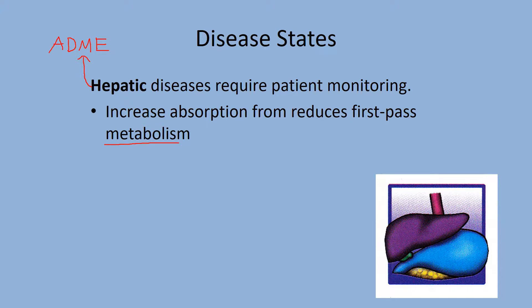As you recall from basic biopharmacology, everything that's absorbed from the intestines goes to the liver first for first-pass metabolism, and it acts as a checkpoint. But if the liver is not working, then everything is going to flood directly into the bloodstream before the liver has a chance to alter it.